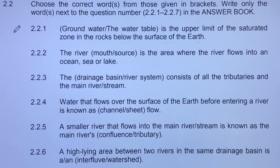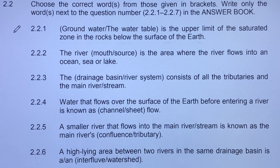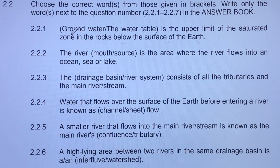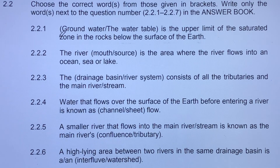Welcome back to our lesson video. In this lesson we're going to choose the correct words from those in brackets — selecting the word that best fits in the sentence. This is geomorphology. So: groundwater or the water table is the upper limit of the saturated zone in the rocks below the surface of the earth.